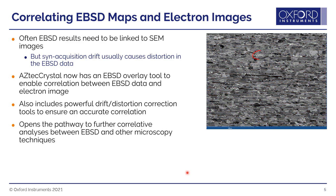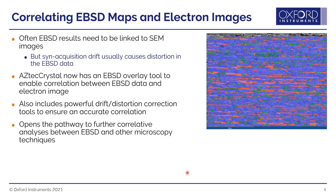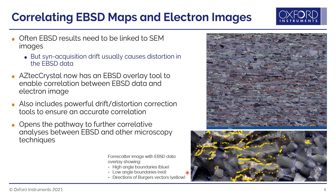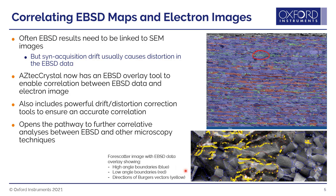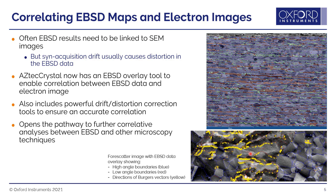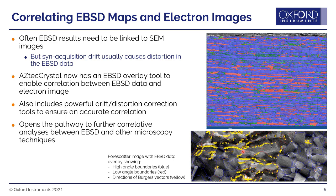This really opens a pathway to further correlative analyses linking EBSD with other microscopy techniques and imaging tools. As an example, this is a recrystallized and deformed nickel superalloy sample. We're looking at a forescatter image with an overlay showing EBSD boundary data — high angle boundaries in blue, low angle boundaries in red — and plotting the directions of the Burgers vectors using yellow arrows. This allows a powerful correlative approach combining EBSD and microscopy.